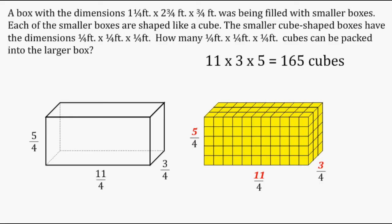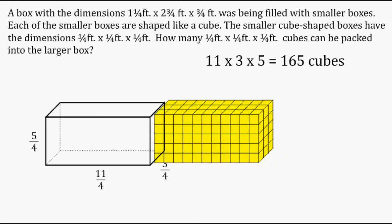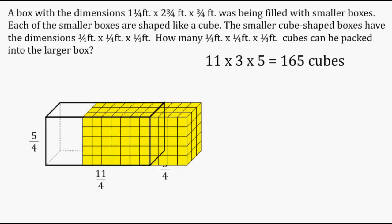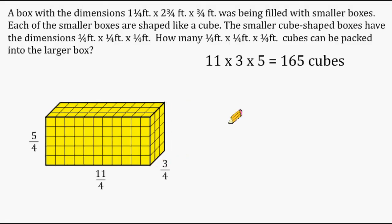We are able to pack 165 cubes, each with an edge length of a quarter foot, inside the larger box. The yellow cubes were drawn to scale to show they fit neatly inside the rectangular prism. One important note: 165 does not represent the volume in cubic feet — it simply represents how many smaller cubes can be packed inside the larger box.